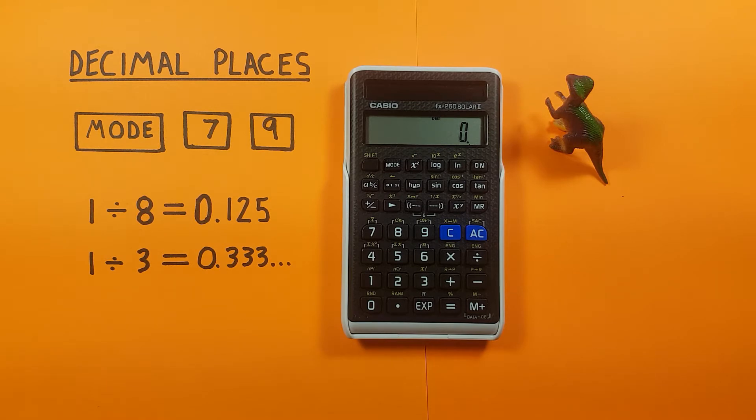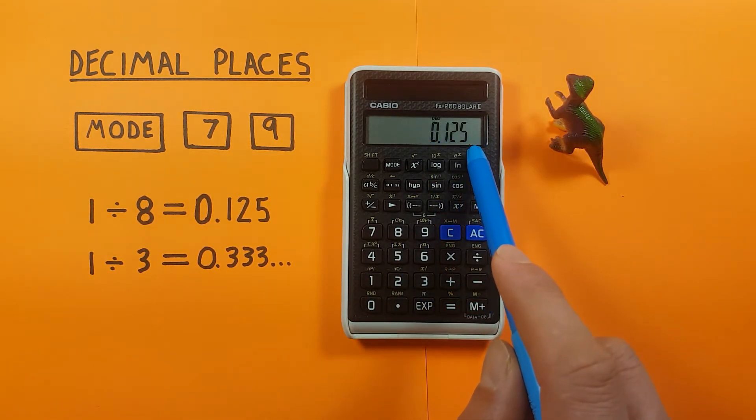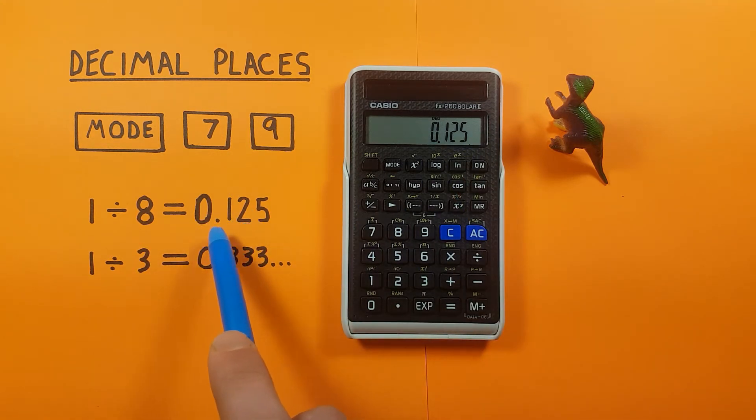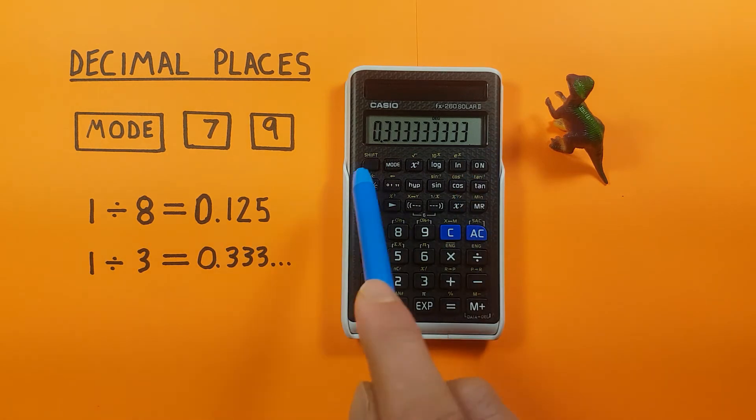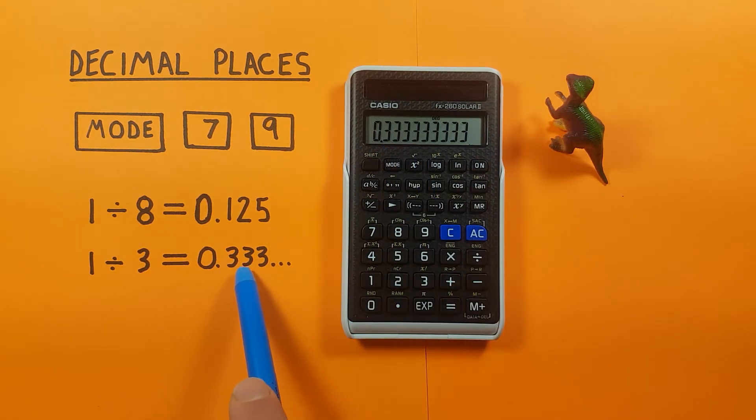So typically this calculator is in what's called float mode where the number of decimals displayed are however many are needed to give you the full answer. So for example if we go 1 divided by 8 you see we get three decimal places because the answer of that is 0.125, while if we go 1 divided by 3 we see we use all the decimal places because the answer to that is 0.333 repeating.